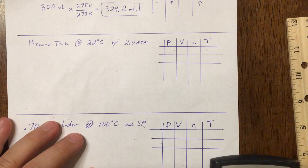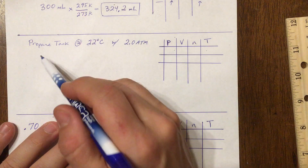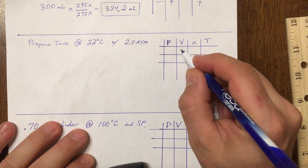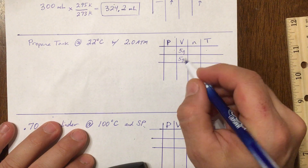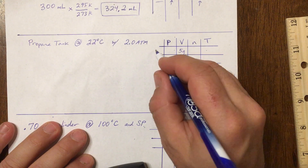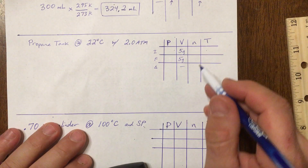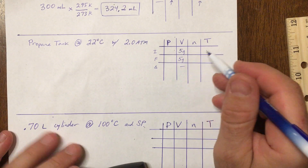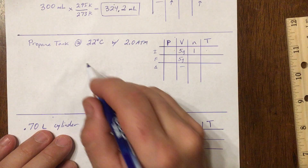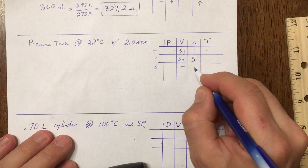Let's look at another one. We have a propane tank at room temperature with two atmospheres of pressure. This tank is a fixed volume — let's say it's a five-gallon tank. Volume is not going to change, so it stays at five gallons for both initial and final. For particle number, let's say we put five times the number of particles in there — so that's a factor of five to one, meaning particle number is going to increase.